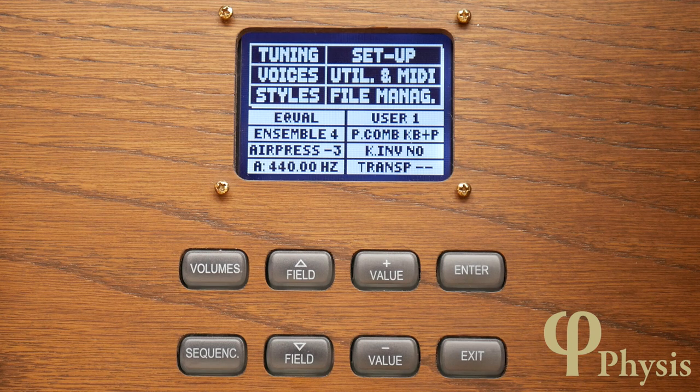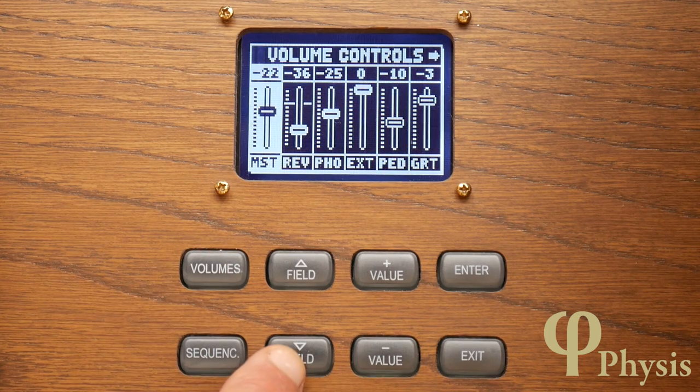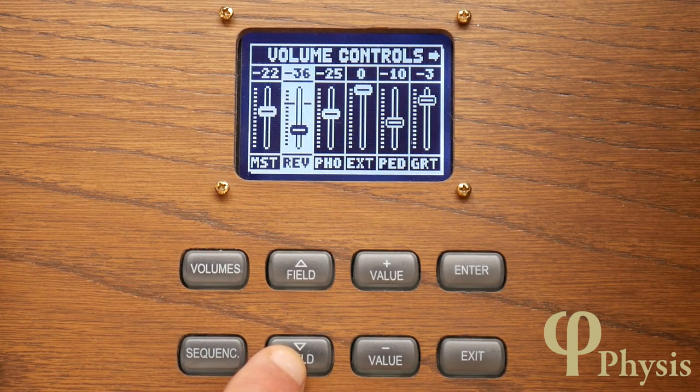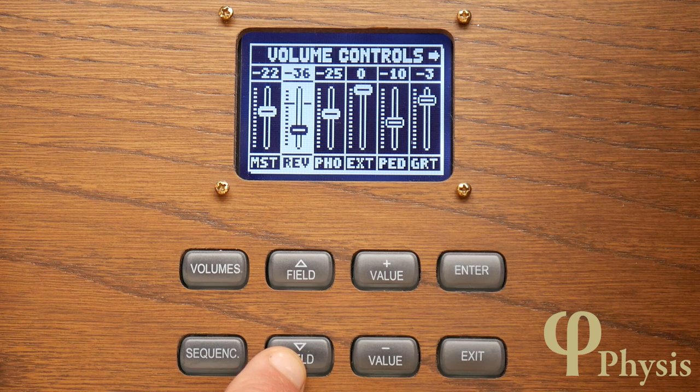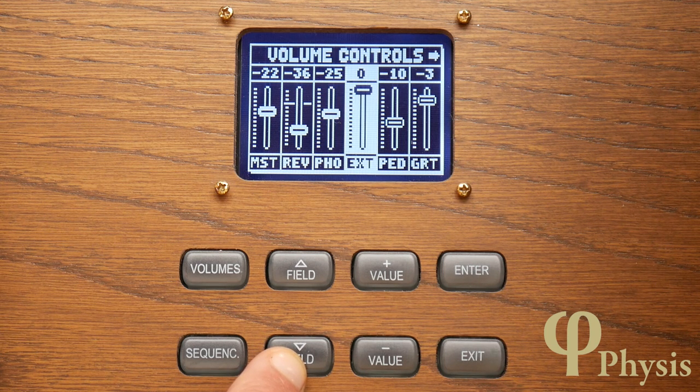If we select the volumes page from the main control panel, it's possible to adjust the levels of different parts and outputs of the organ. So the first one is the master output control, the second one is the level of the reverb, the third one is the level of the headphone output, and the fourth one is the level of the external output.